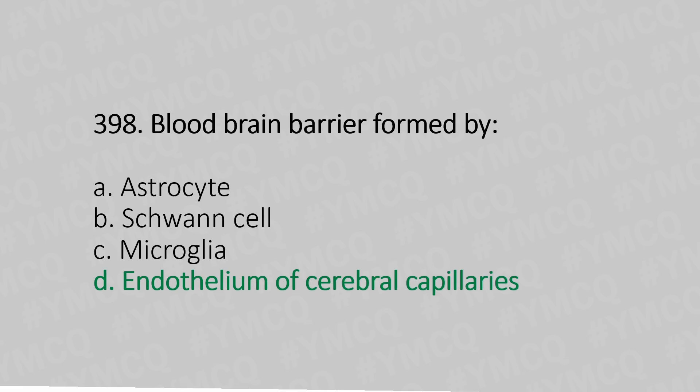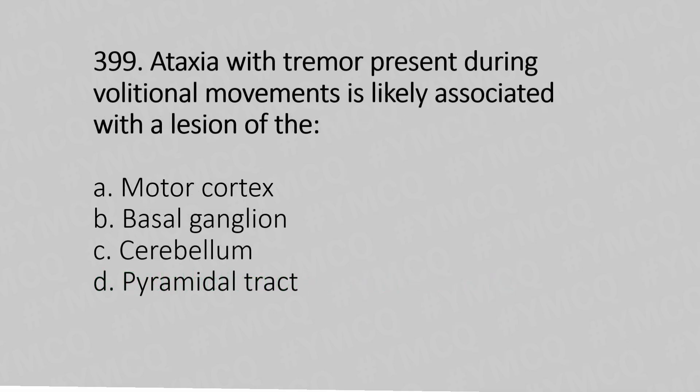Question 399: Ataxia with tremor during volitional movement is likely associated with dysfunction of which structure? Option A: motor cortex. Option B: basal ganglia. Option C: cerebellum. Option D: pyramidal tract. The answer is Option C: cerebellum.